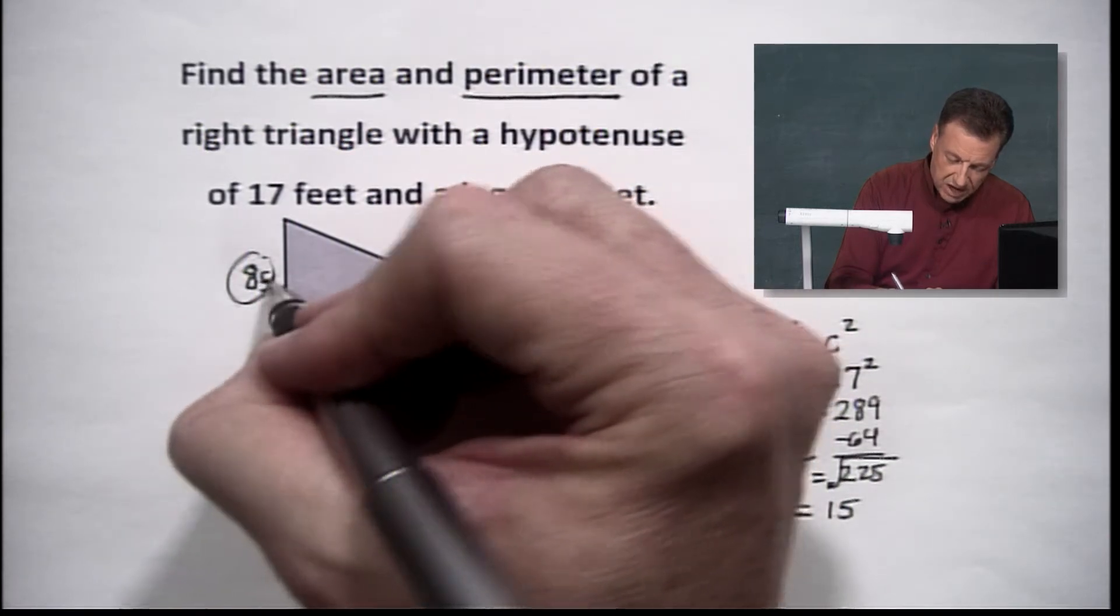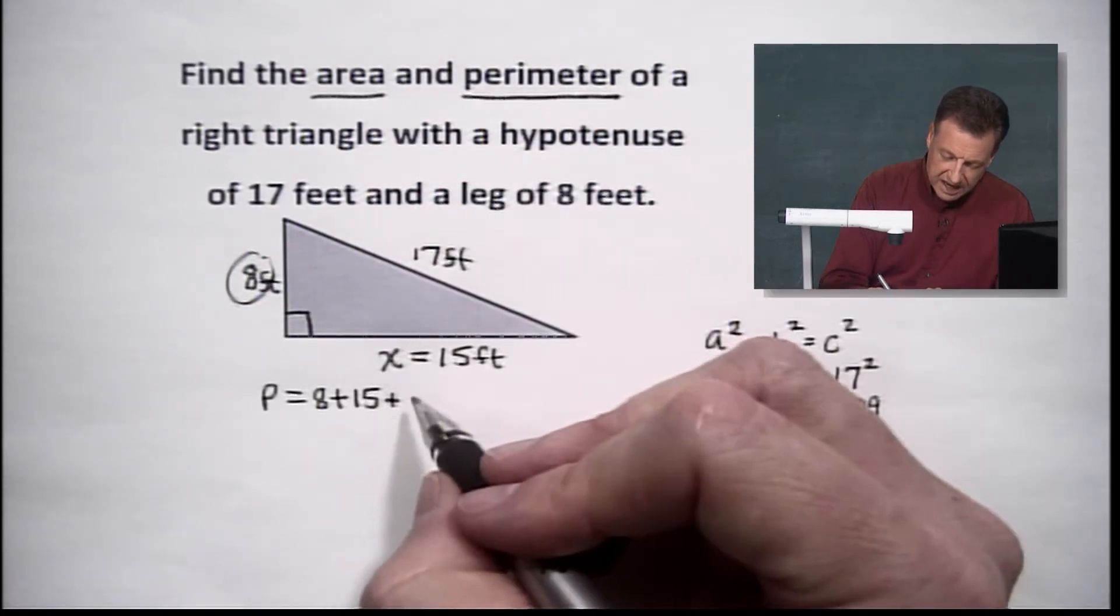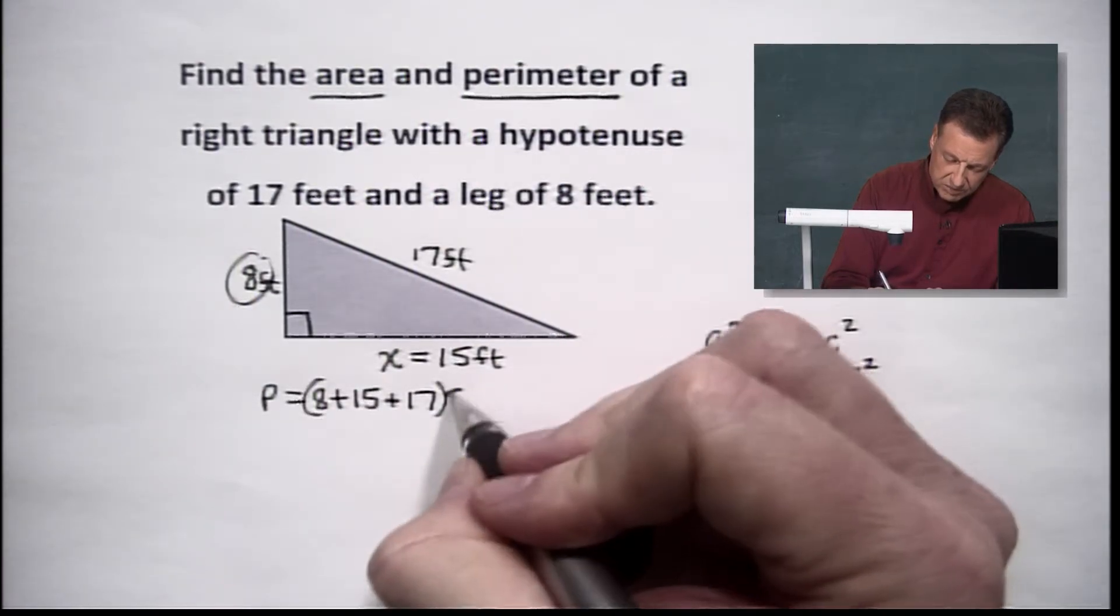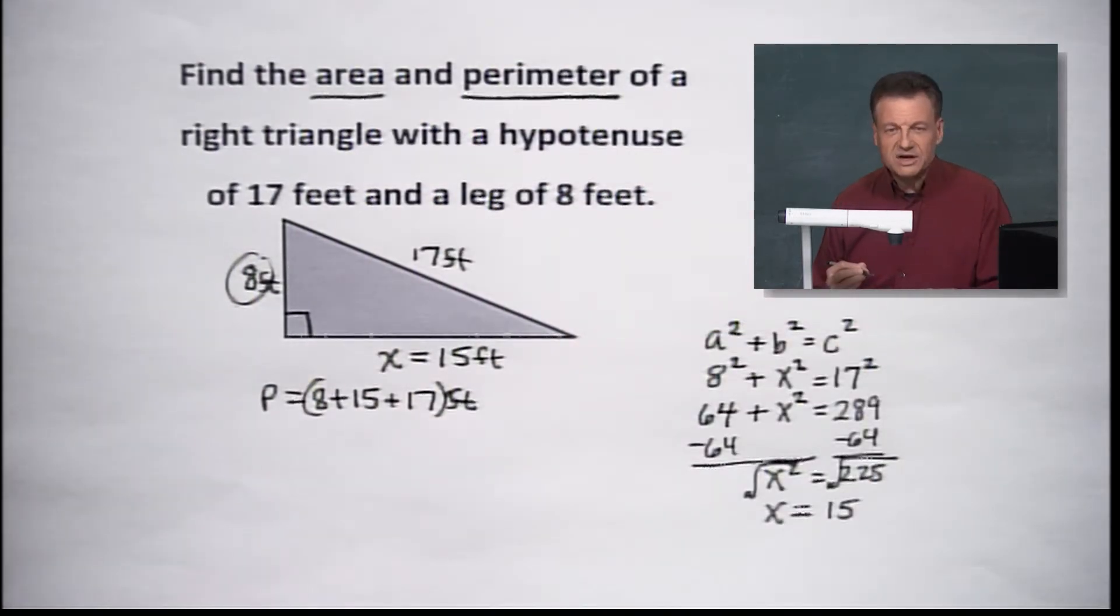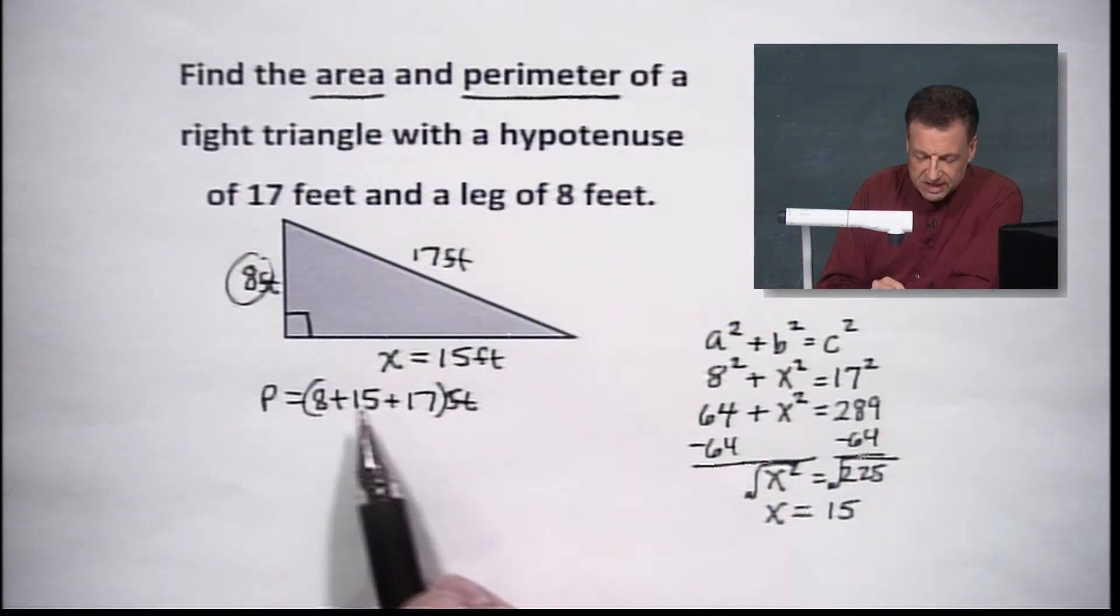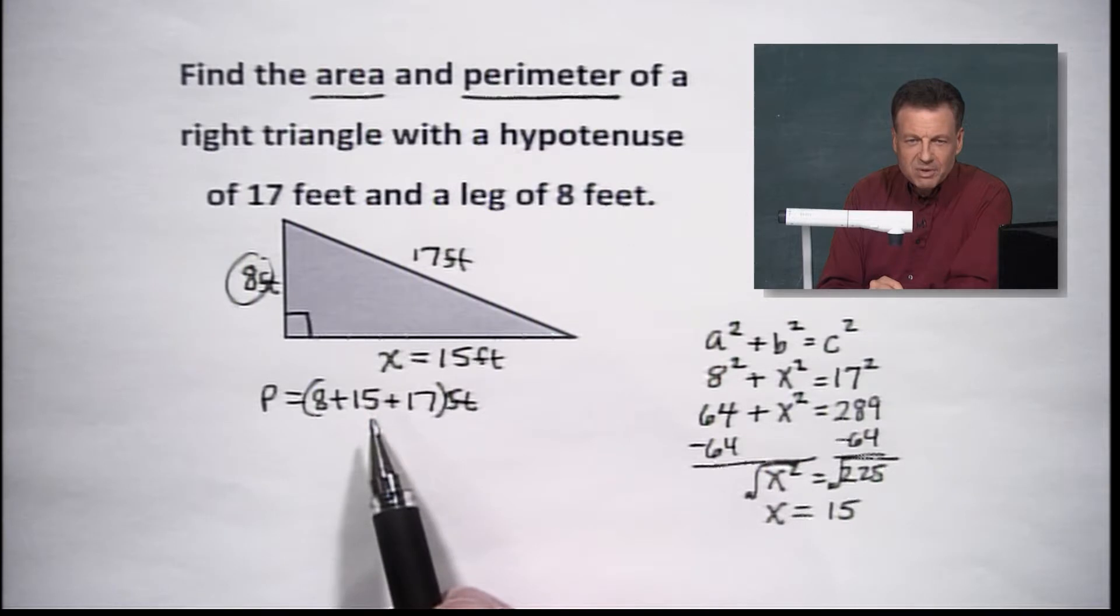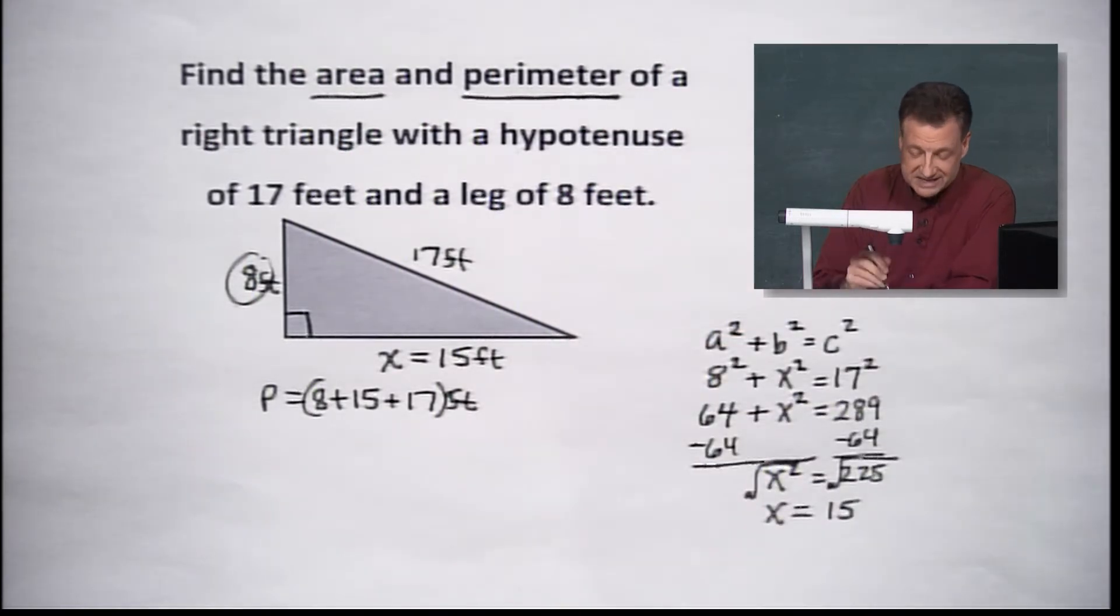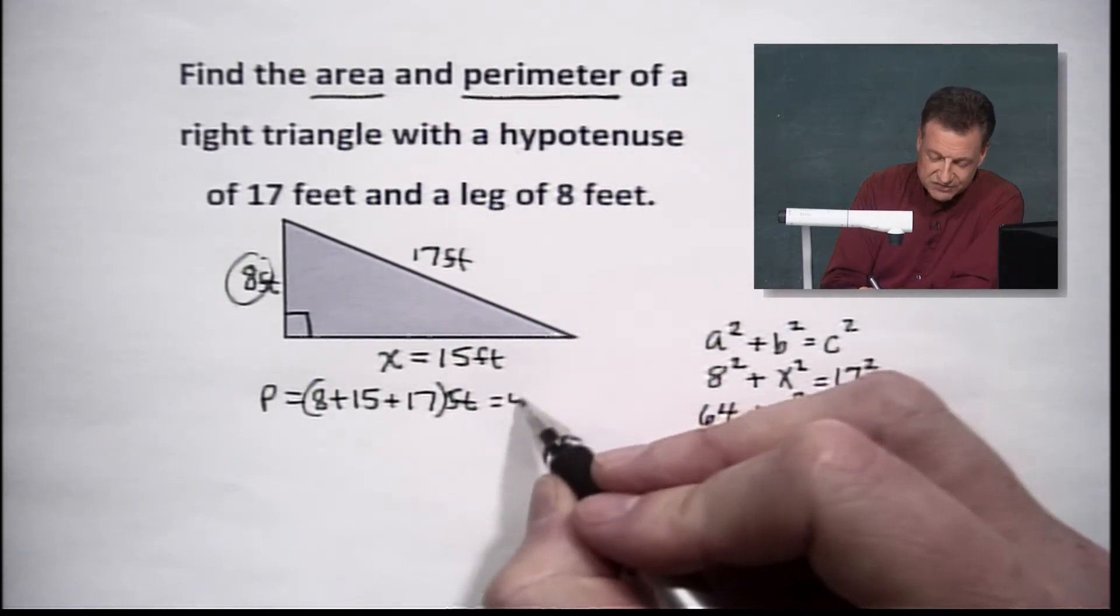Why do we have to remember that, Ernie? Because we're going to add them all together, and we'll put the measurement of feet on there. It'll just stay the same. So 8 plus 15, last time I checked, that's going to be what? Somebody want to give me a help on that? I think it's 23 add 17. Let's try it again.